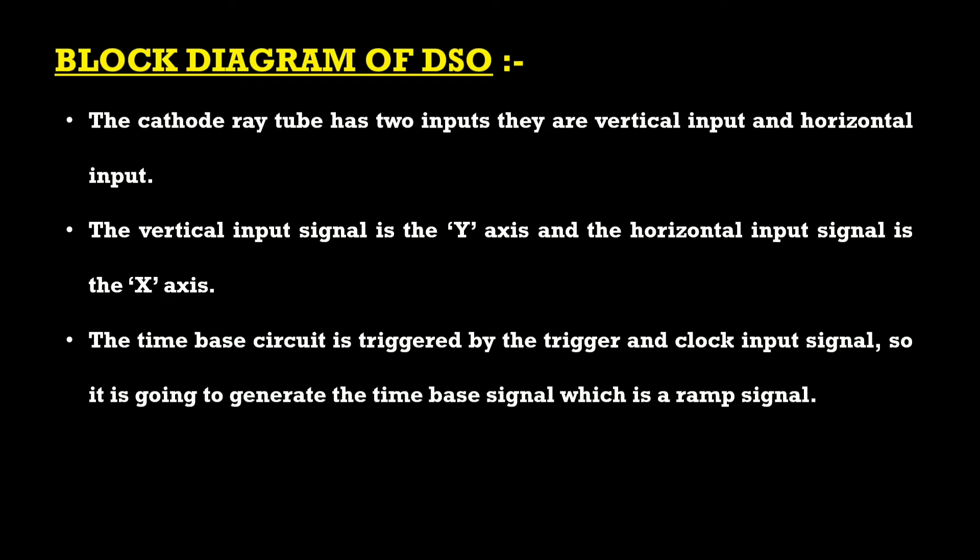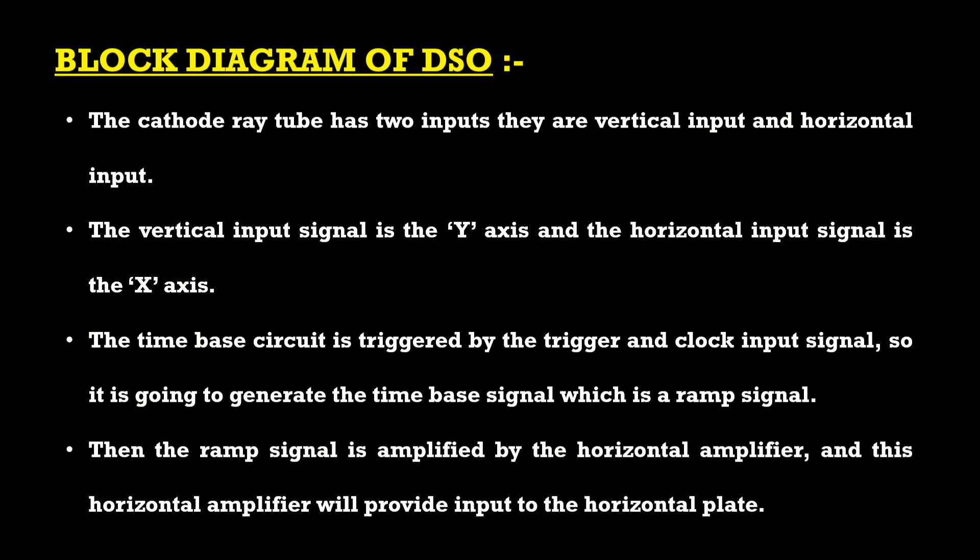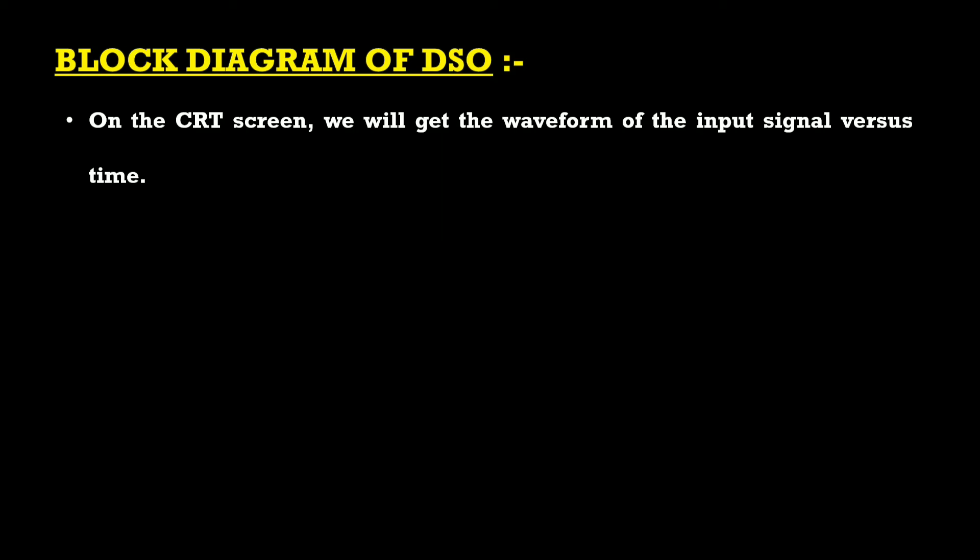The time-base circuit is triggered by the trigger and clock input signal, generating a ramp signal. That ramp signal is amplified by the horizontal amplifier, which provides input to the horizontal plates of the CRT. On the CRT screen, we get the waveform of the input signal versus time — the input signal on the Y-axis and time on the X-axis.